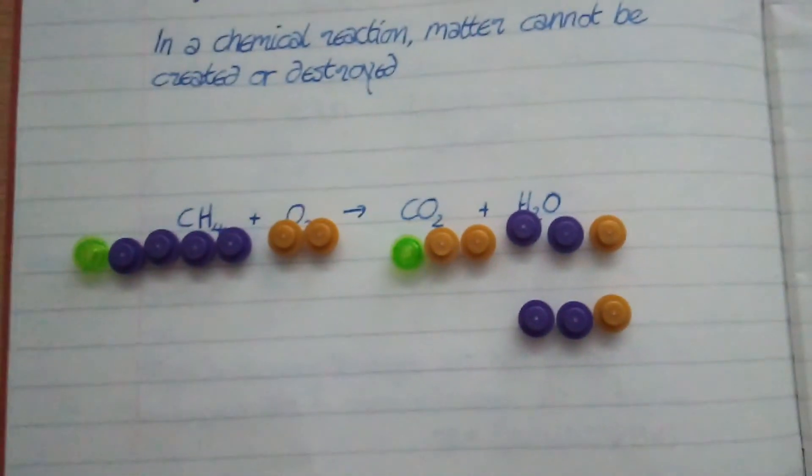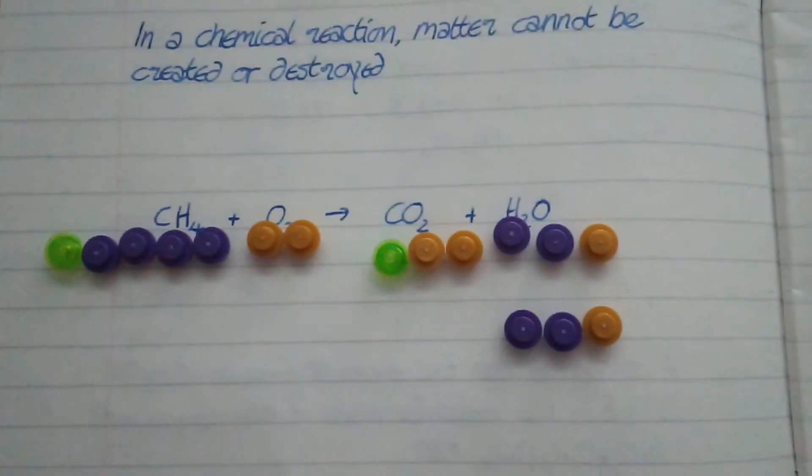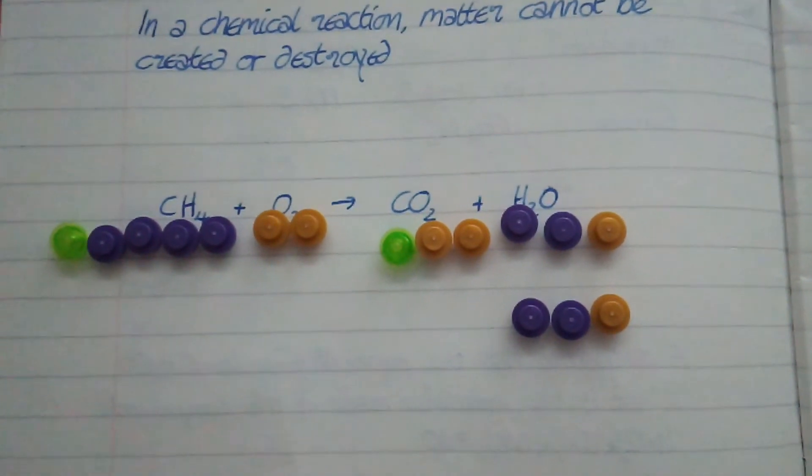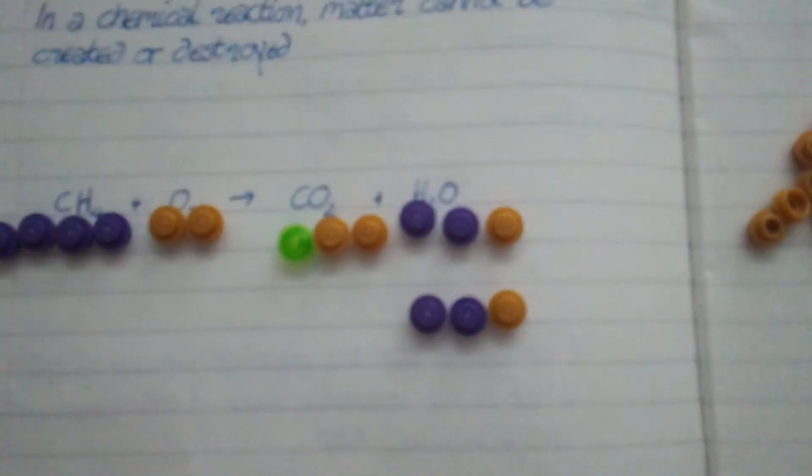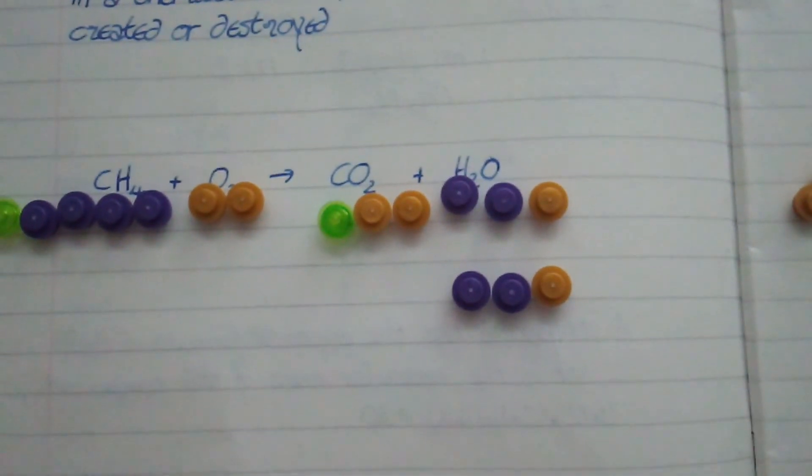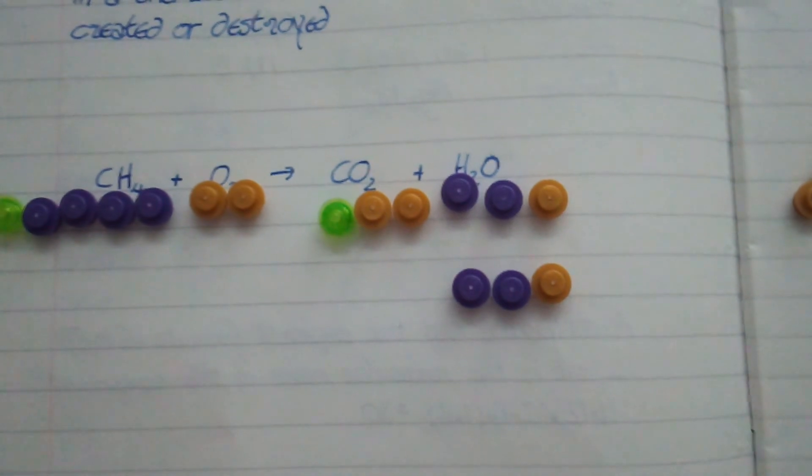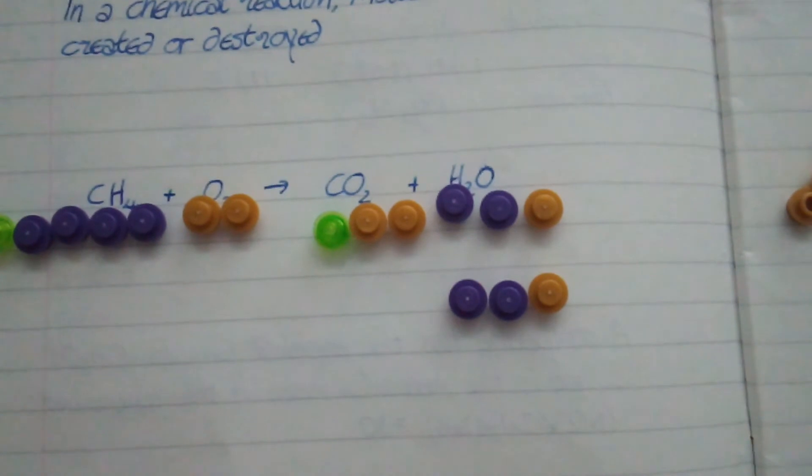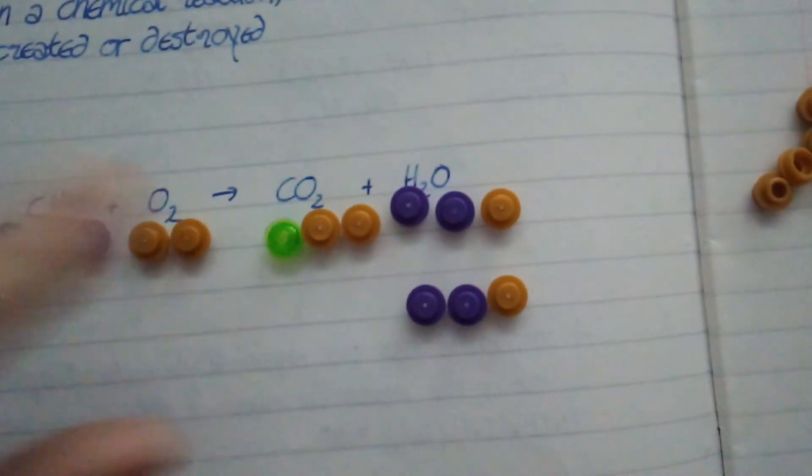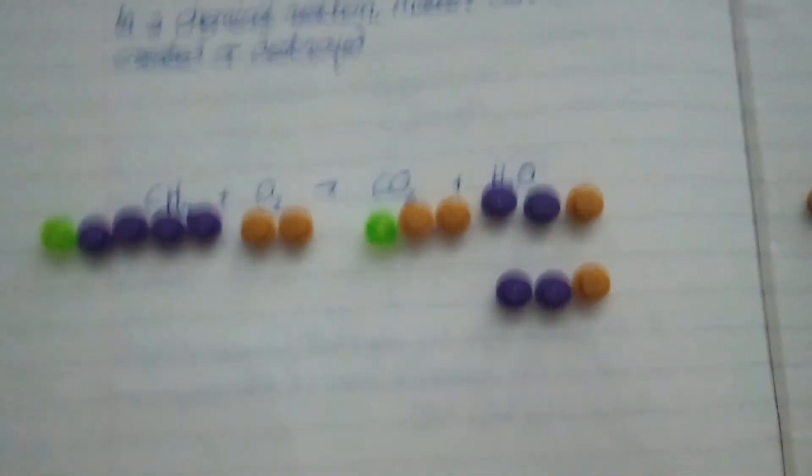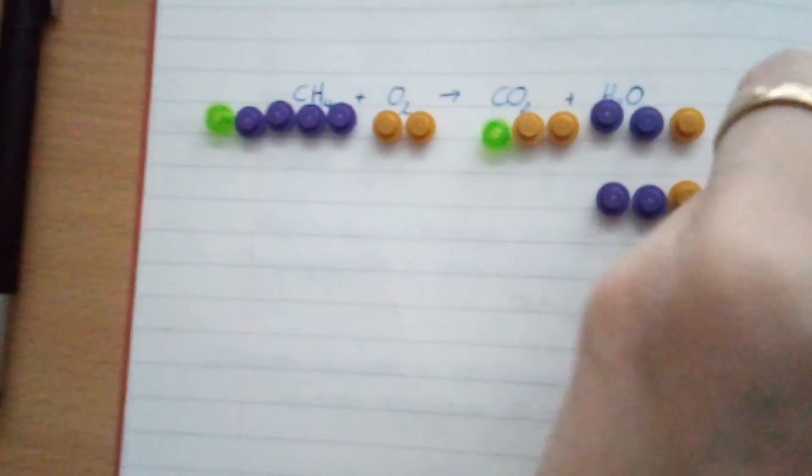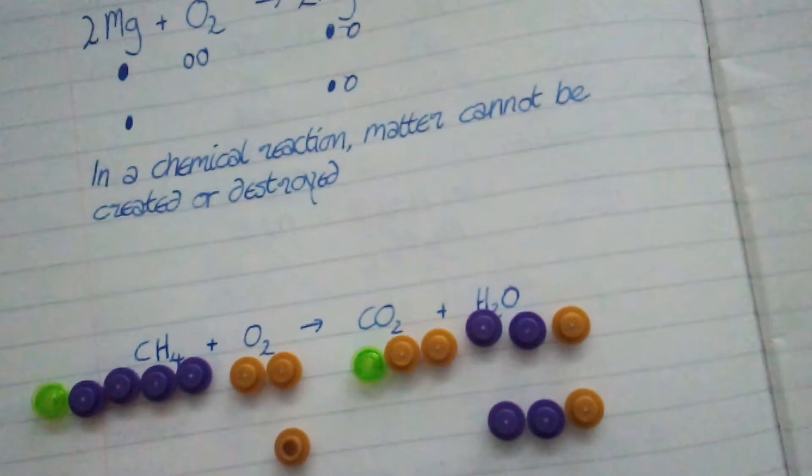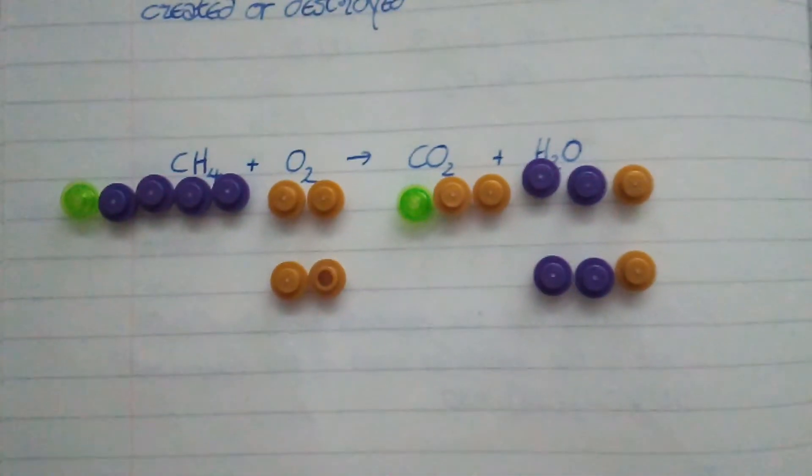One carbon on each side. Yay, one green on each side. Let's look at my purples, my hydrogens. I've now got four on each side. Fantastic, that's working. And now I look at my oxygens, my golds. I've got two on the left and four on the right. How can I get more oxygen on my left side? Oh, hang on a second. O2 all by itself. Well, that's nice and easy. I can just add one more O2. So let's get my little gold ones. There you go. One more O2.